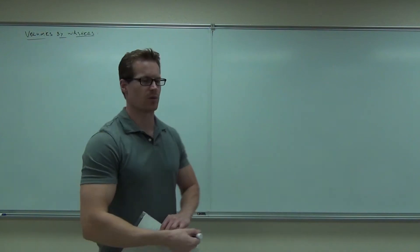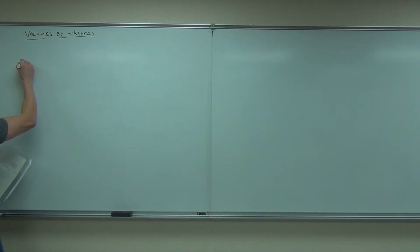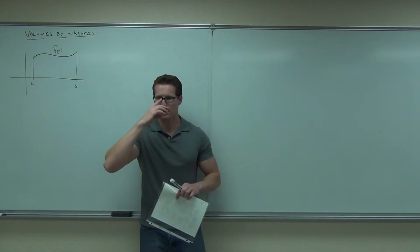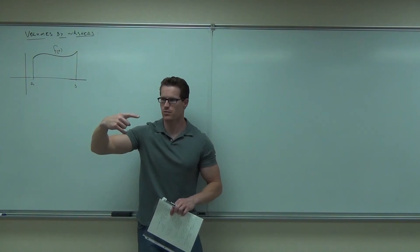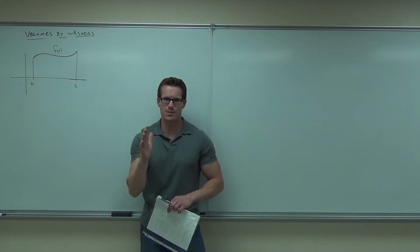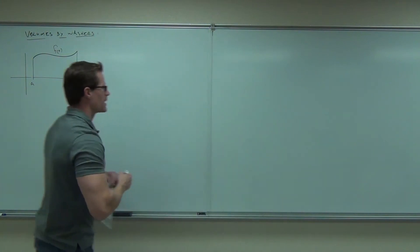The idea of volumes by washers stems from this problem. What would happen, say, if I had my famous function called f of x from a to b? Now, here's where we started. Okay, this is what we were just talking about. If you sweep this around the x axis, it will create a volume. It will create a solid and we will be able to find the volume by taking slices with our disks. That's true. However, what happens if there's another function between f and the x axis? Namely, let's call it g of x.